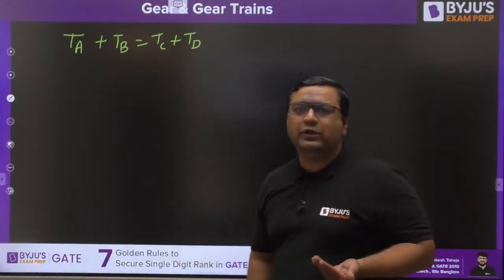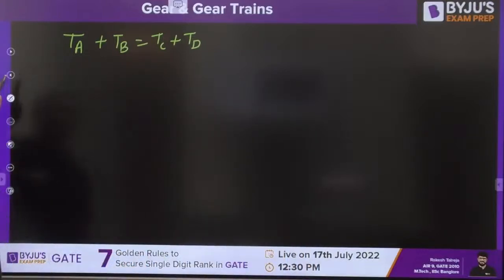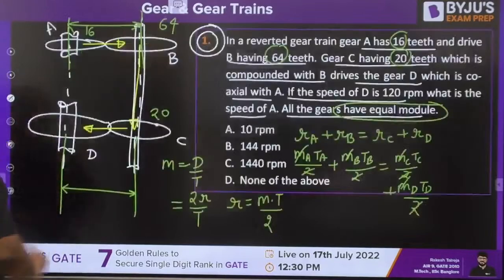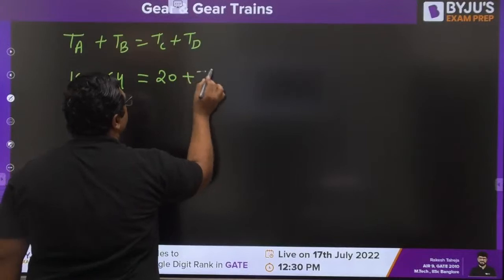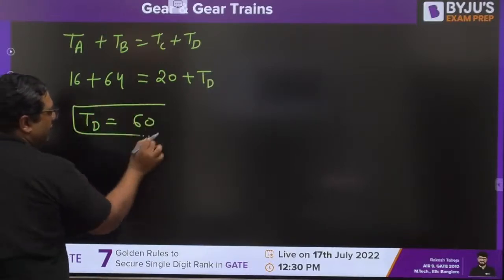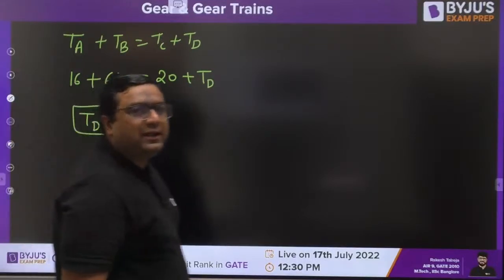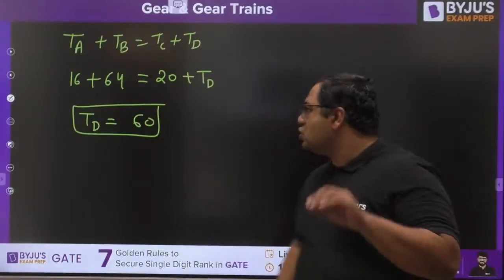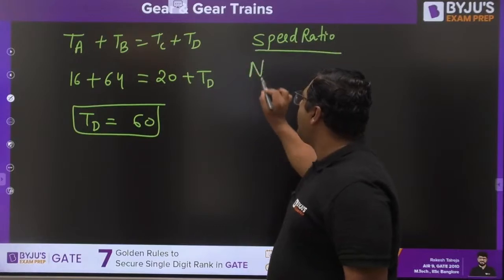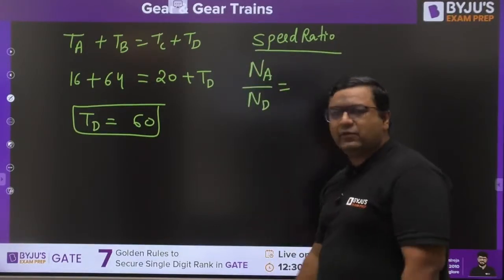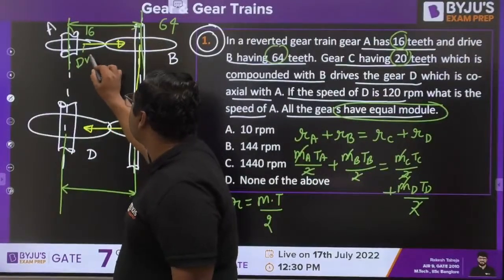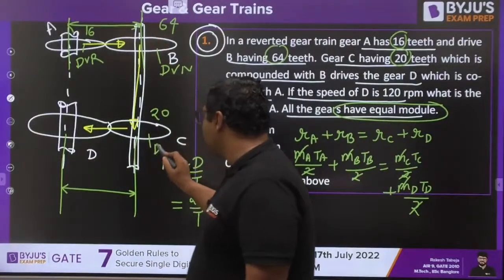Substituting the known values: 16 + 64 = 20 + tD, so tD = 80 − 20 = 60 teeth. Now for a compound gear train, the speed ratio (speed of driver / speed of driven) equals the product of driven teeth divided by the product of driver teeth. Here B and D are driven gears, so: NA/ND = (tB × tD) / (tA × tC).